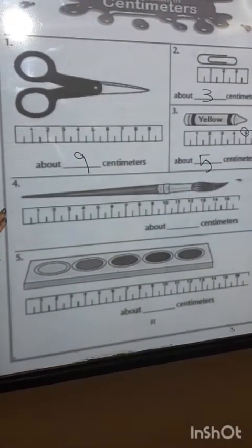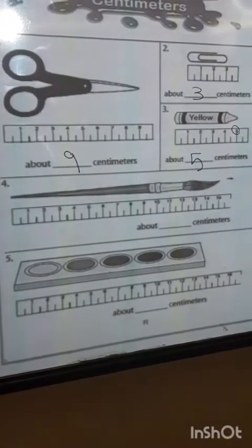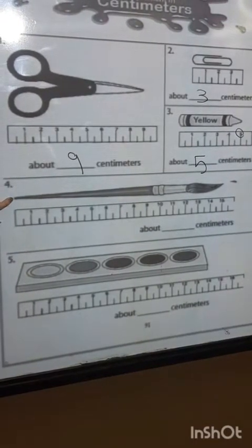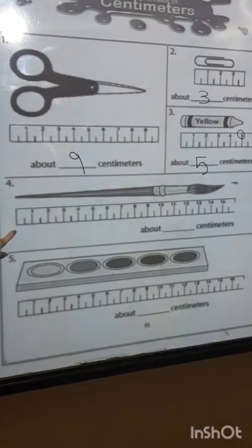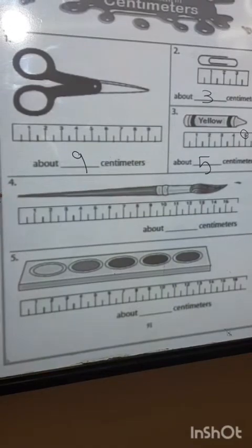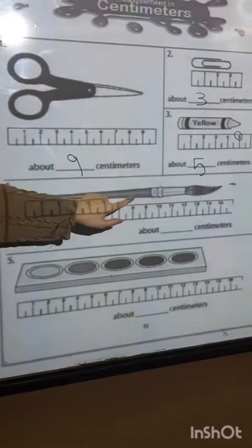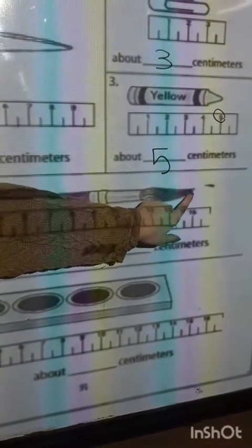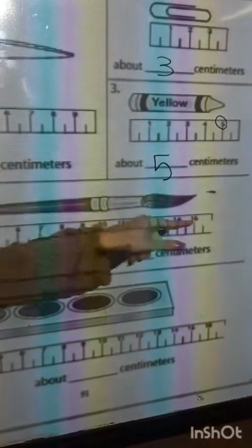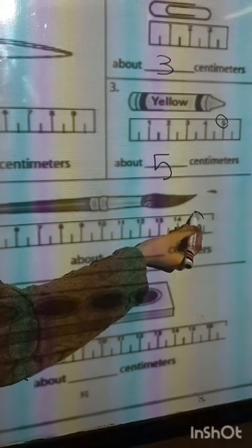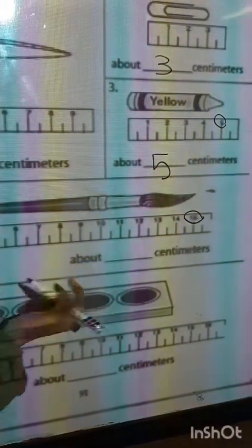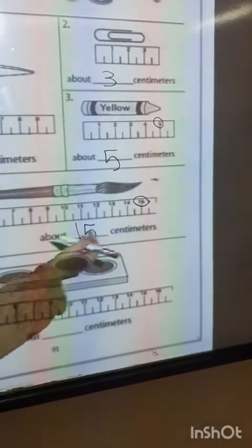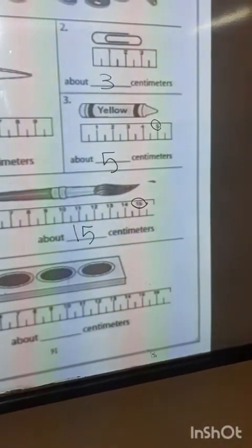We want to measure this object. Make sure that we start from the starting point — 0. Put your fingers at the end of this object. The number will be 15. This is about 15 centimeters.